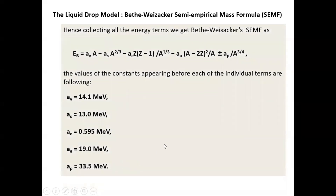Collecting all terms of the Bethe-Weizsäcker semi-empirical formula, the complete binding energy is: volume term + surface term + Coulomb term + asymmetry correction + pairing term. The constants A_V, A_S, A_C, and the others have been determined empirically from experimental data.